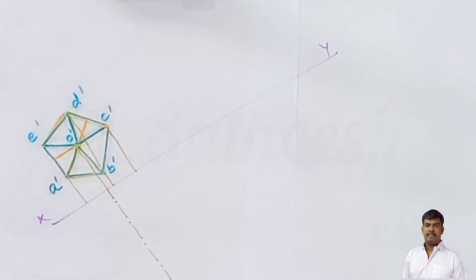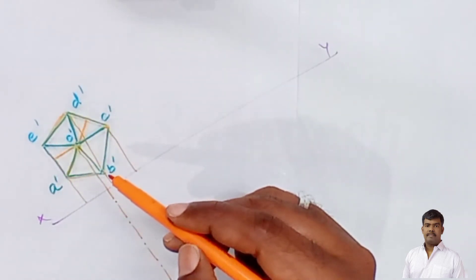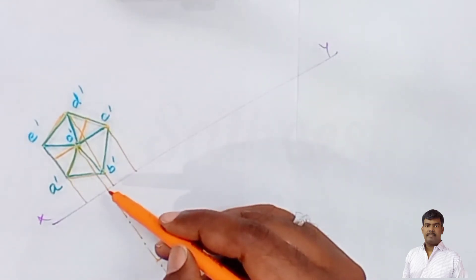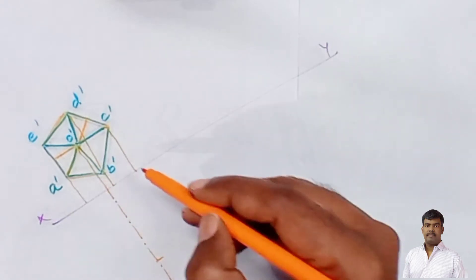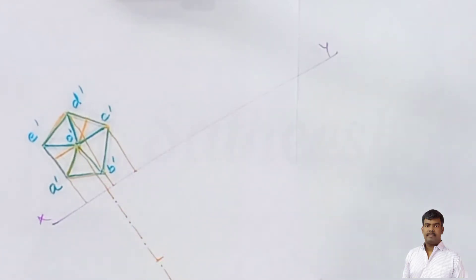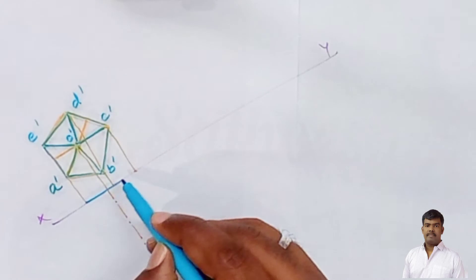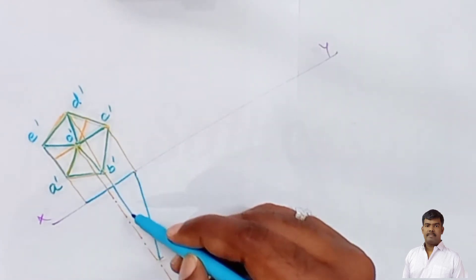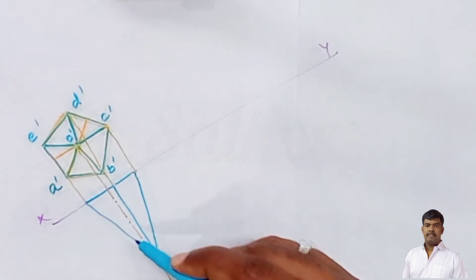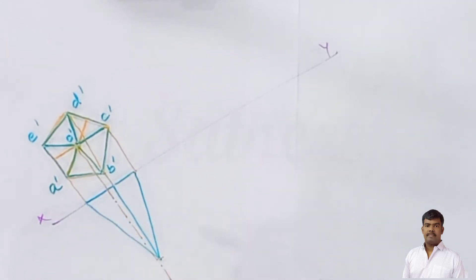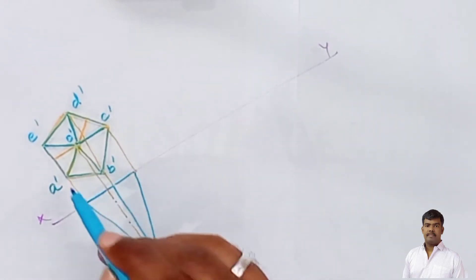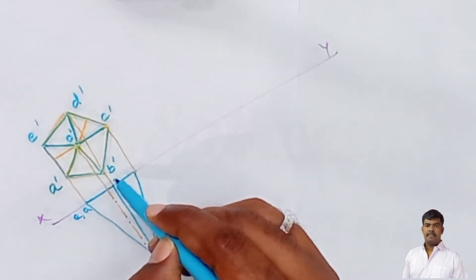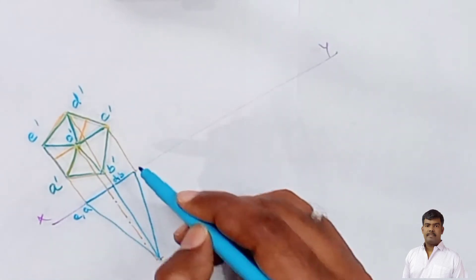The base pentagon side is 30mm and the axis is 60mm long. Mark the 60mm distance from the axis and join it. The apex o is here; e and a coincide, d and b coincide, and c is at the front.